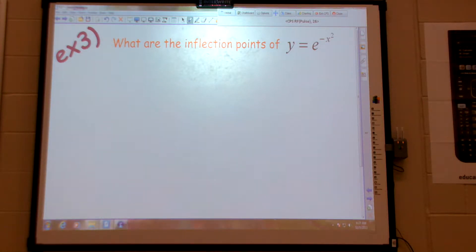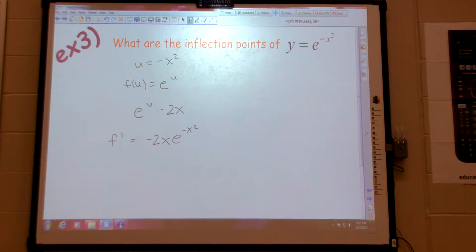Let's do y prime. I'm going to let u equal negative x squared. f of u is e to the u. So I have e to the u times negative 2x. So f prime is negative 2x e to the negative x squared. Correct?